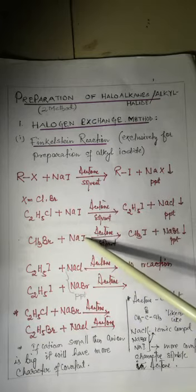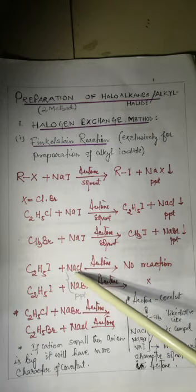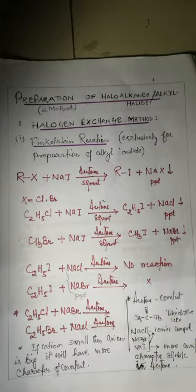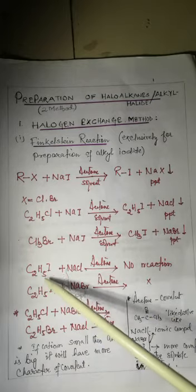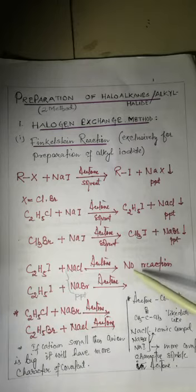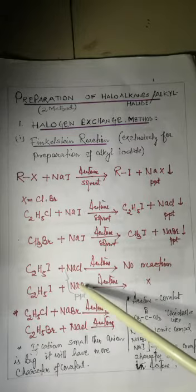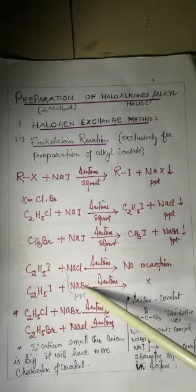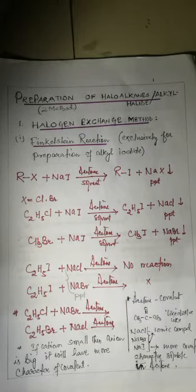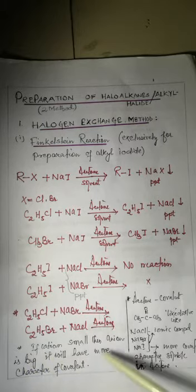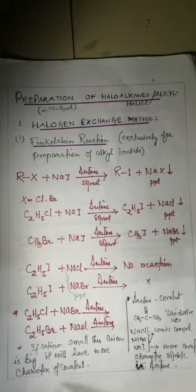The attacking reagent is sodium iodide only. If we use sodium chloride and sodium bromide in the presence of acetone with ethyl iodide, there will be no reaction. Sodium chloride and sodium bromide are in precipitate form. If the cation is small and the anion is big, it will have more covalent character.